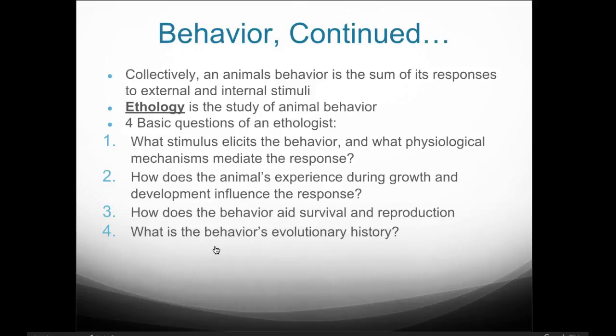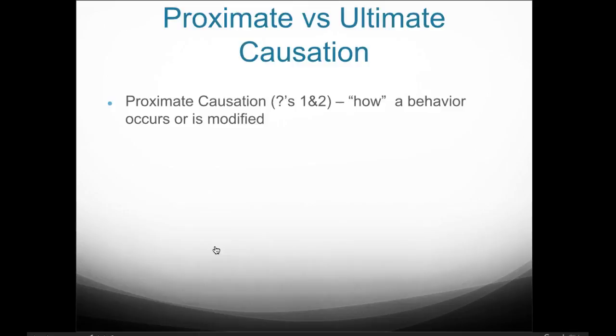So these are four questions. As we do the animal behavior lab, I want you to be thinking about these things when we're working with our bugs in class. This is where we come in with proximate or ultimate causation. Proximate causation would include questions one and two — the 'how' aspect: how does a behavior occur or how is it modified?